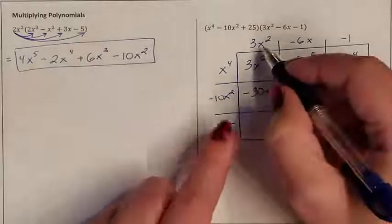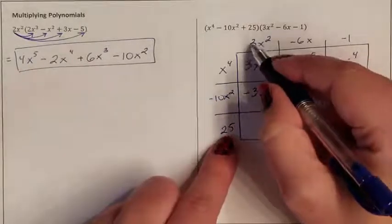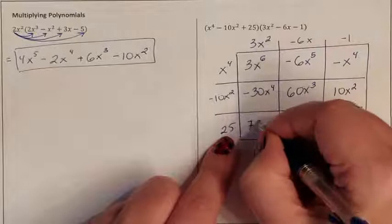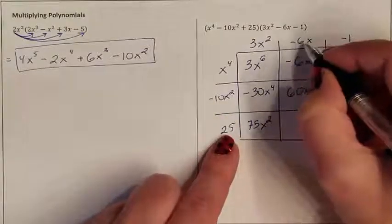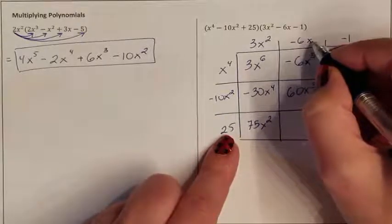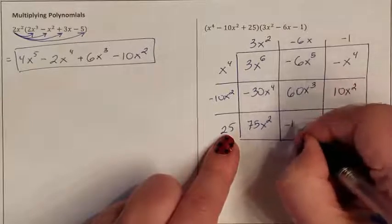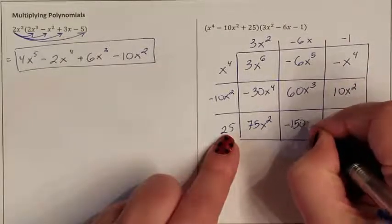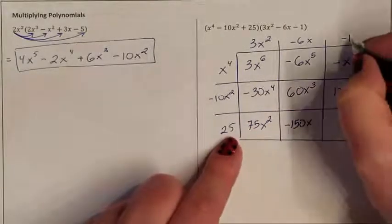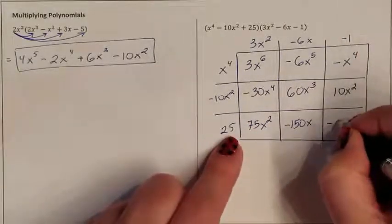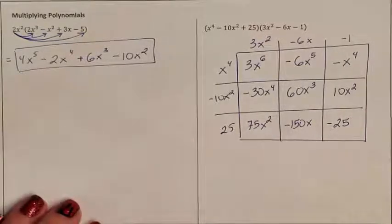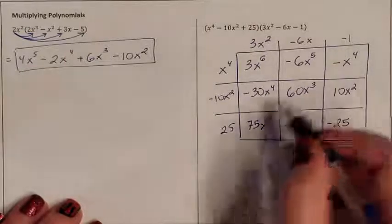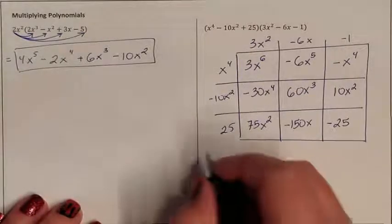Now it's 25's turn. 25 times 3x squared is 75x squared. 25 times negative 6x is negative 150x. 25 times negative 1 is negative 25. Now we just need to make sure we combine like terms accurately. Because they're kind of all over the board, we're just going to write them down.